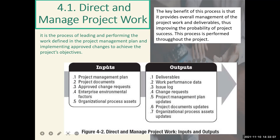The inputs and outputs of this process are depicted here in the figure. For the inputs, we have: number one, project management plan; number two, project documents; number three, approved change requests; number four, enterprise environmental factors; and number five, organizational process assets. For the outputs, we have: number one, deliverables; number two, work performance data; number three, issue log; number four, change requests; number five, project management plan updates; number six, project document updates; and number seven, organizational process assets updates.